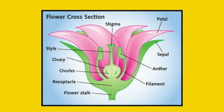A unisexual flower is when the androecium and gynoecium are present in separate flowers — that is, the male flower is a different one and the female flower is a different one. They can form on the same plant body in different branches or in totally different plant bodies. Examples of unisexual flowers include papaya, maize, and cucumber.